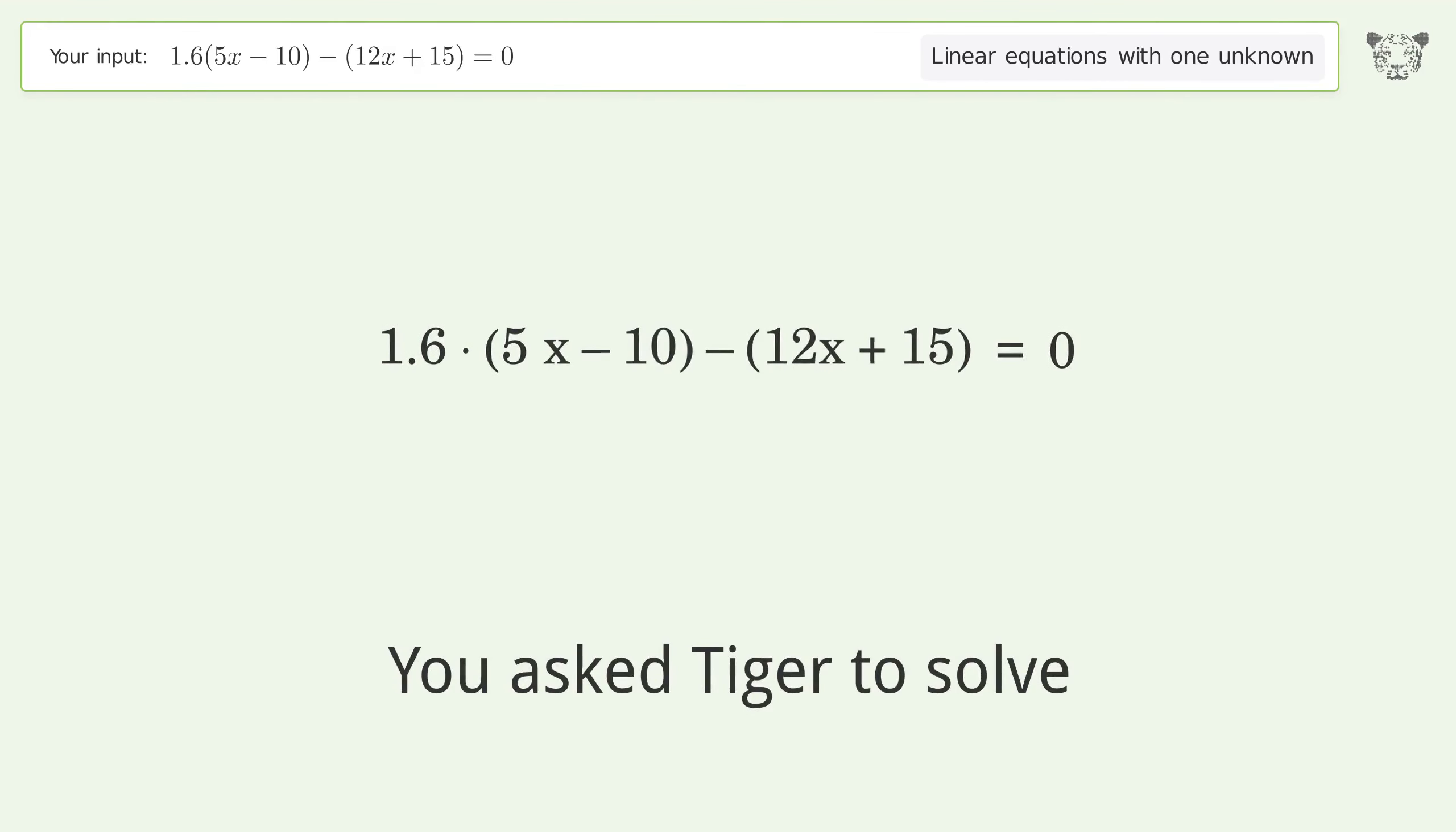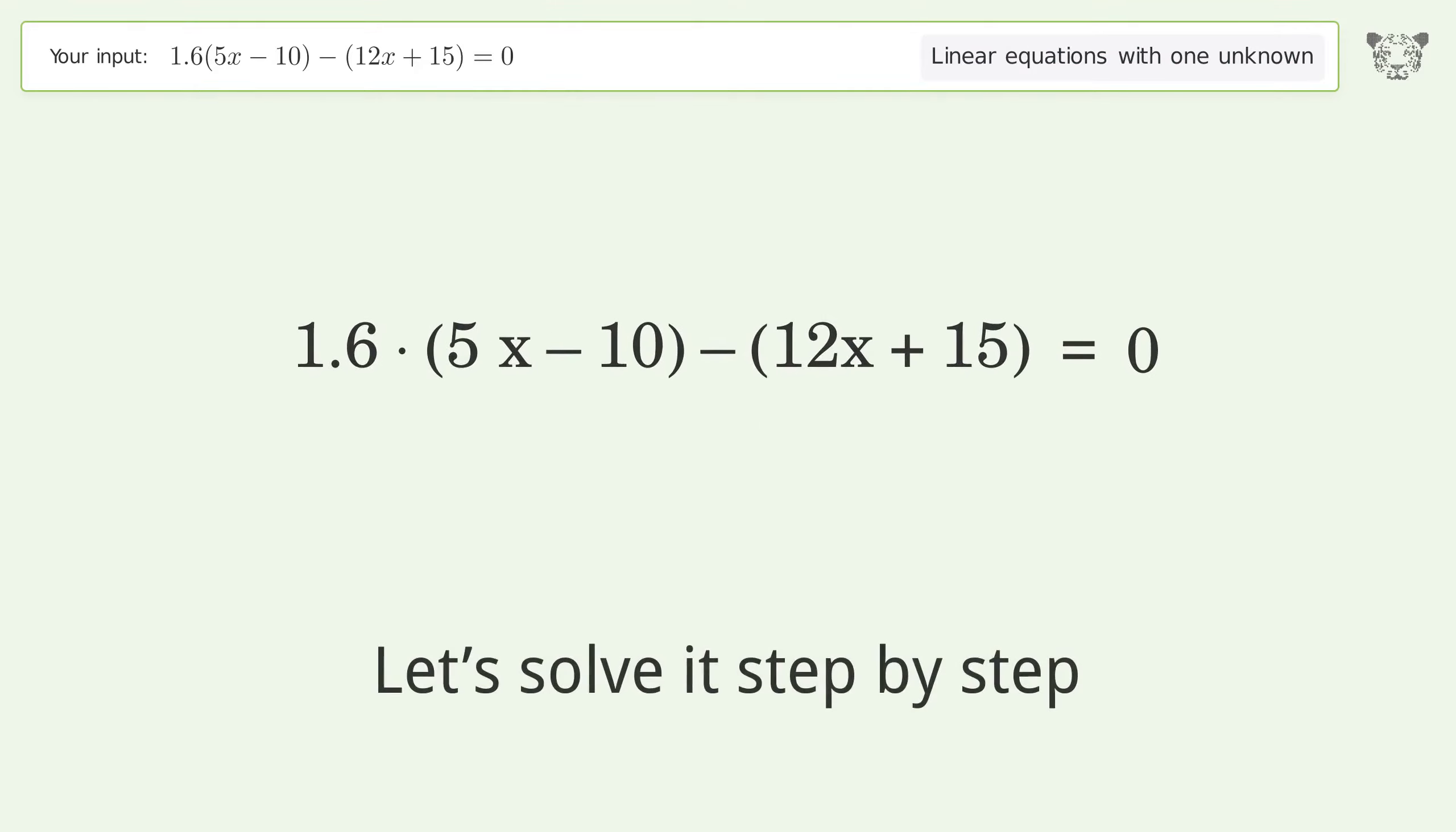You asked Tiger to solve this. It deals with linear equations with one unknown. The final result is x equals negative 31 over 4. Let's solve it step by step.